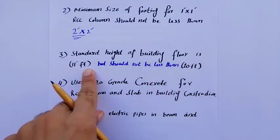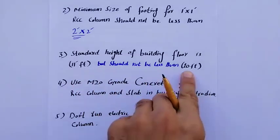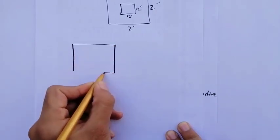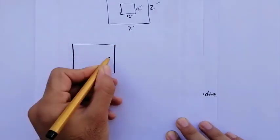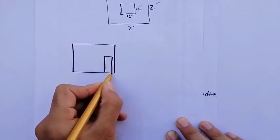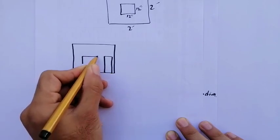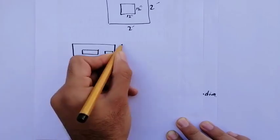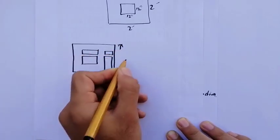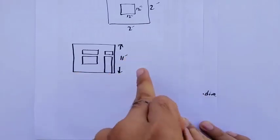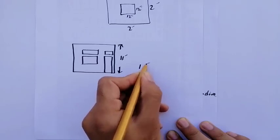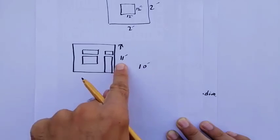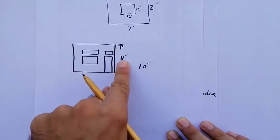The standard height of a building floor is 11 feet, but it should not be less than 10 feet. This is the cross-section of the building floor — you can see the ventilators here. The standard floor height is 11 feet, but don't provide a floor height less than 10 feet.